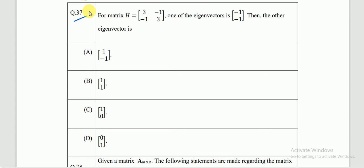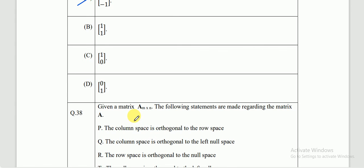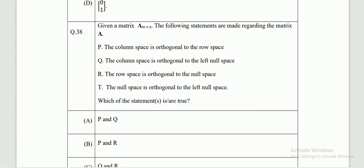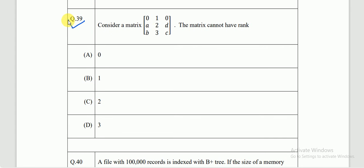Question number 37 is based on eigenvalues and eigenvectors and has already been solved. You can find the link to the solution in the description or comment box. The correct answer is option A. Questions 38 and 39 have also already been solved — links are available in the description or comment box.